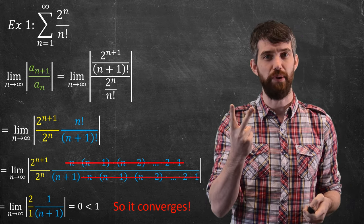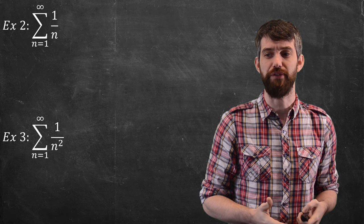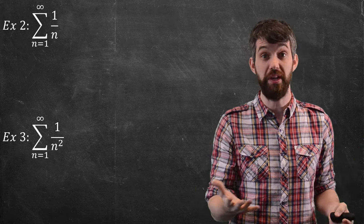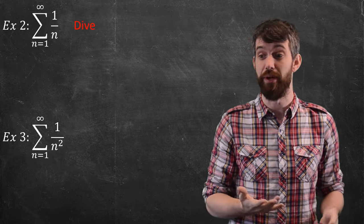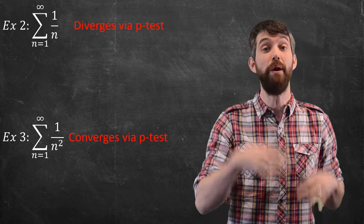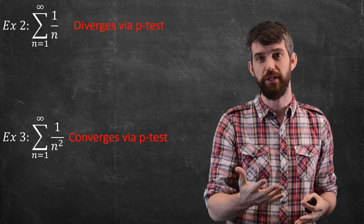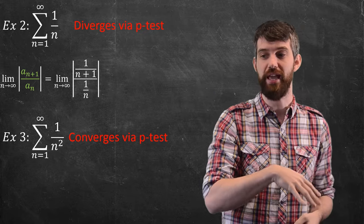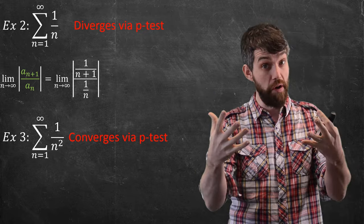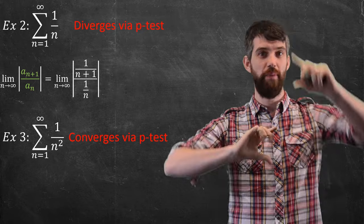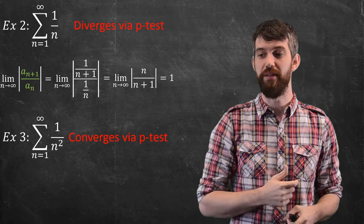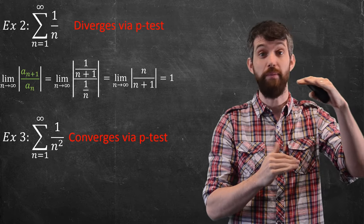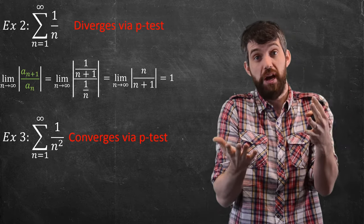Now let's see two examples where it's the inconclusive case: the sum of 1/n and the sum of 1/n². These are both p-series. The top one is p=1 so it diverges; the bottom one is p=2 which converges. But if I consider the ratio a_{n+1}/a_n for the top one: 1/(n+1) divided by 1/n gives n/(n+1). Taking the limit — highest power on top over highest power on bottom — n/n, so the limit is just 1.